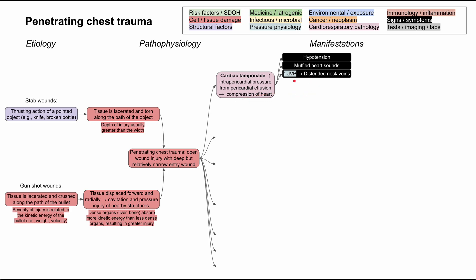The three classic symptoms of cardiac tamponade are hypotension, muffled heart sounds, and distended neck veins. The distended neck veins reflect high jugular venous pressure — jugular venous distension. These are traditionally known as Beck's triad, and it's a classic finding for cardiac tamponade.